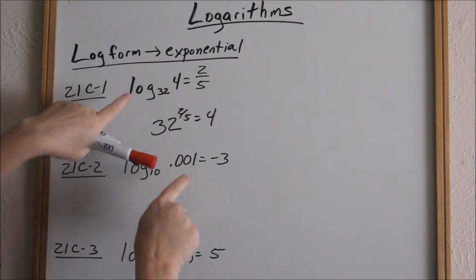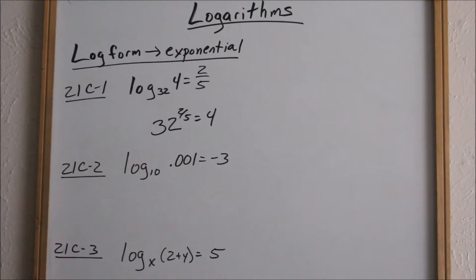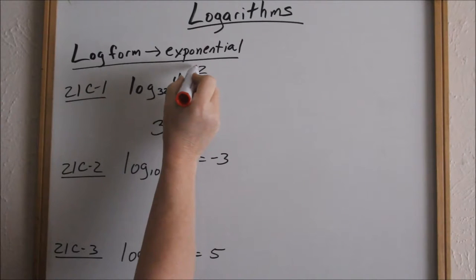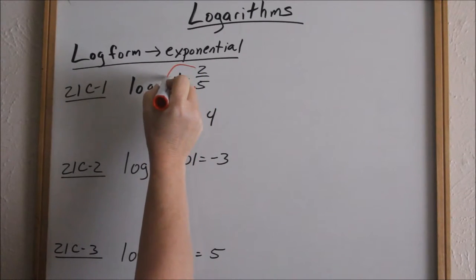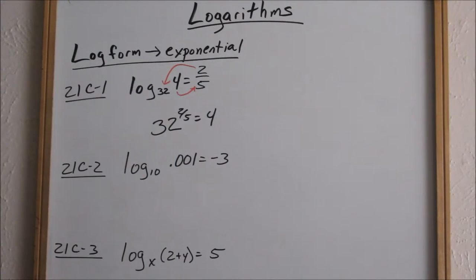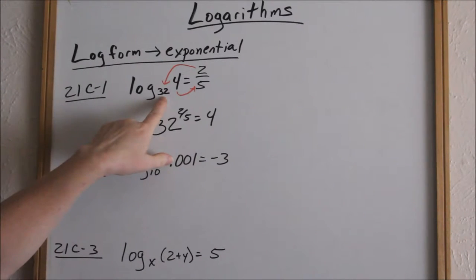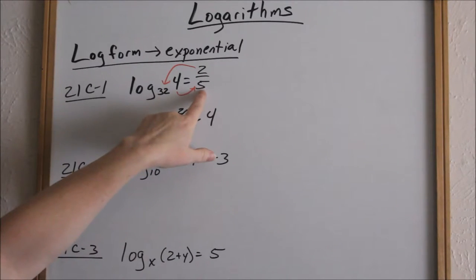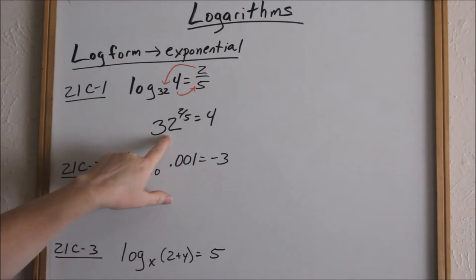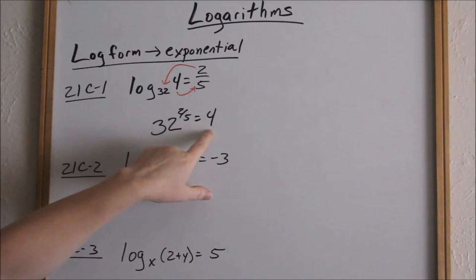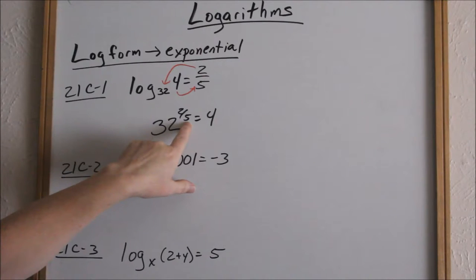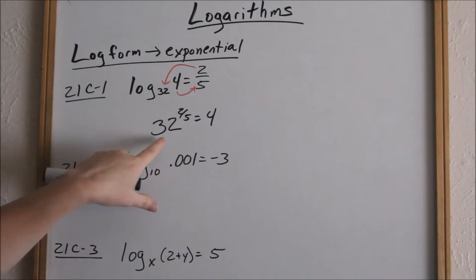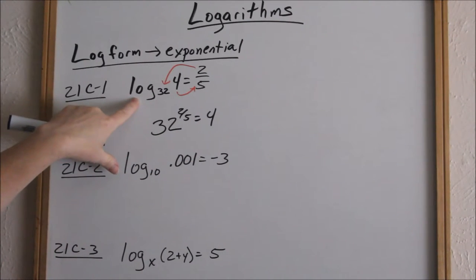Going from log form, this is the way to write it in exponential form. I like to think of it like this: this number goes to the answer on this side, and this two-fifths comes over and becomes the exponent. You're going in a circular motion. Log base 32 — that becomes your base, and this is the exponent. Going through, 32 to the two-fifths equals 4, because 32 to the fifth root is 2, and 2 squared is 4. So that is a true statement, and this is just another way to write it in log form.